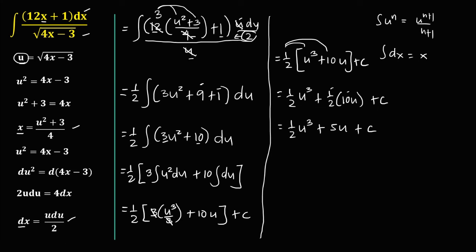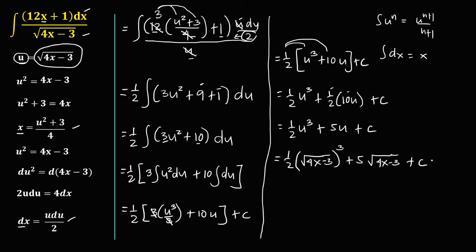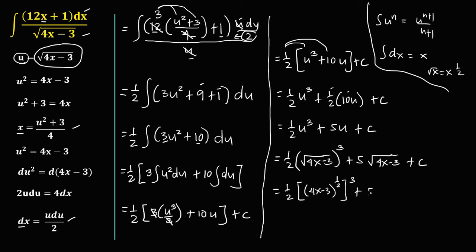Then replace u by its original value. Since u equals the square root of 4x minus 3, this becomes 1 half times the square root of 4x minus 3 to the power 3, plus 5 times the square root of 4x minus 3, plus c. We can rewrite using the fact that square root of x equals x to the power 1 half, so this is 1 half times (4x minus 3) to the power 3 over 2, plus 5 times (4x minus 3) to the power 1 half.